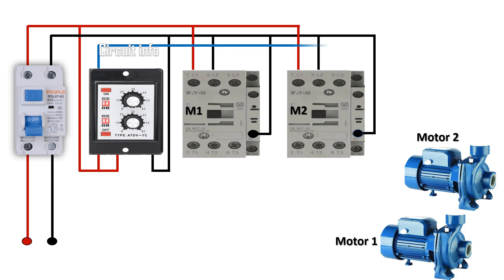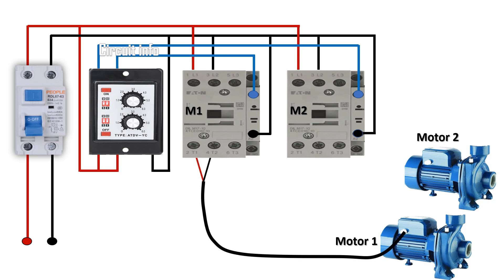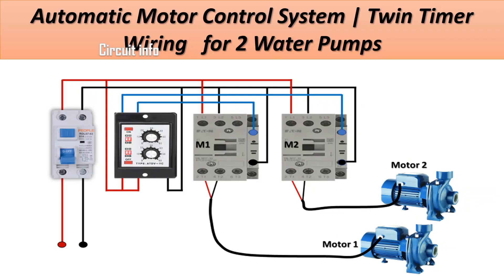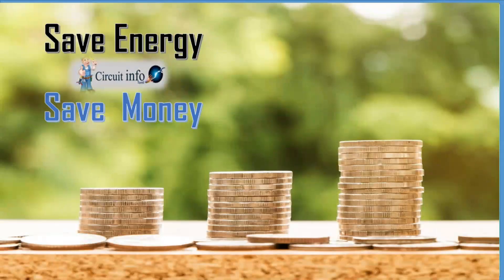This automatic switching system is widely used in industries, water pumping stations, and irrigation systems. It helps in energy saving, reduces maintenance cost, and ensures reliable operation without manual control switching.